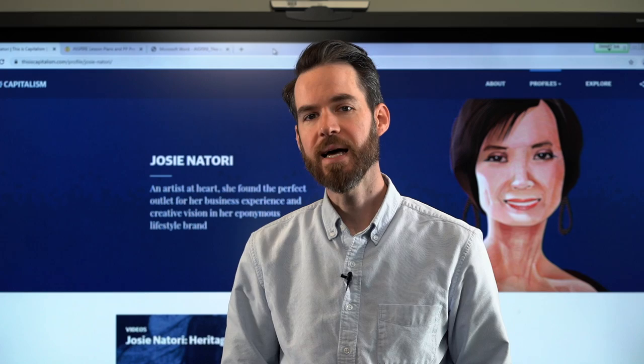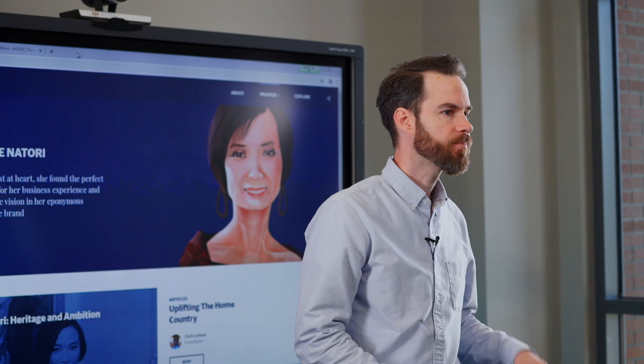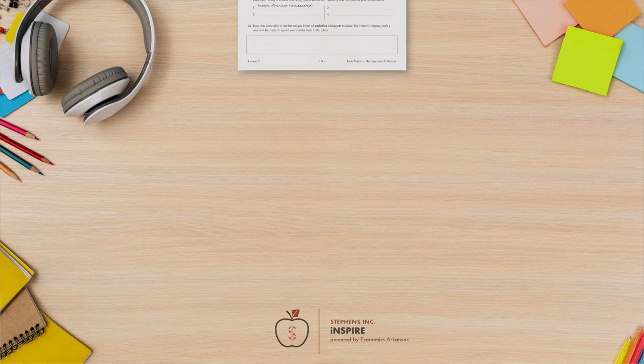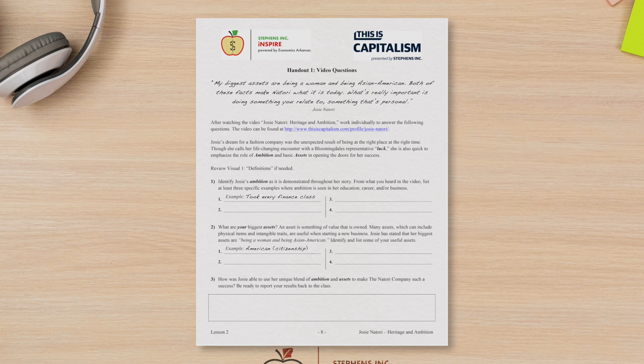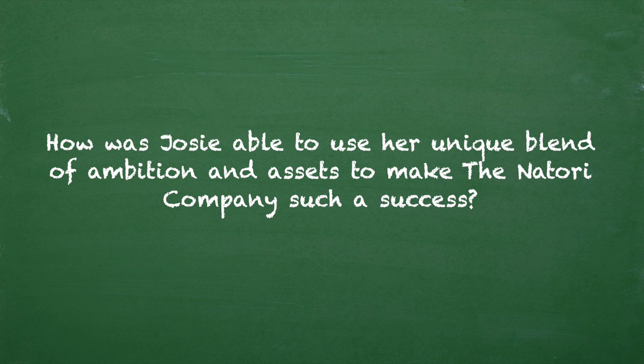To set the stage for this lesson, show the short 4-minute video, Josie Natori, Heritage and Ambition, found at thisiscapitalism.com. Once the video ends, ask or assign students to work together in teams of 3 or 4. Distribute a copy of Handout 1 video questions to each student and allow them 5 minutes to complete the questions individually. The goal of this assignment is to identify the concepts of ambition and assets demonstrated throughout Josie's story.